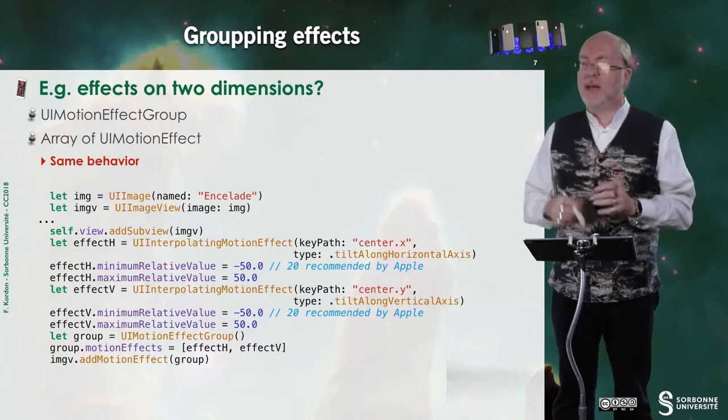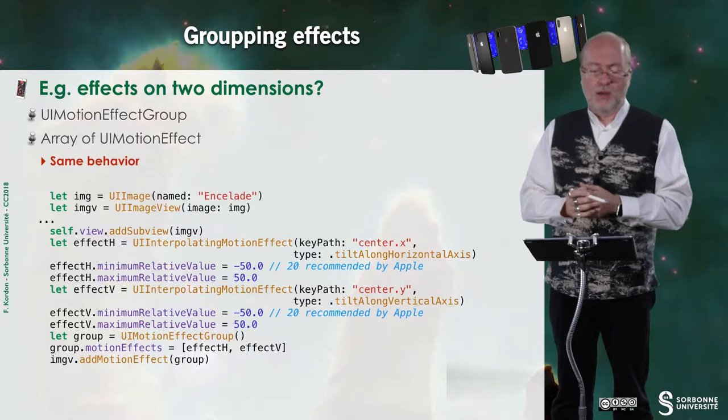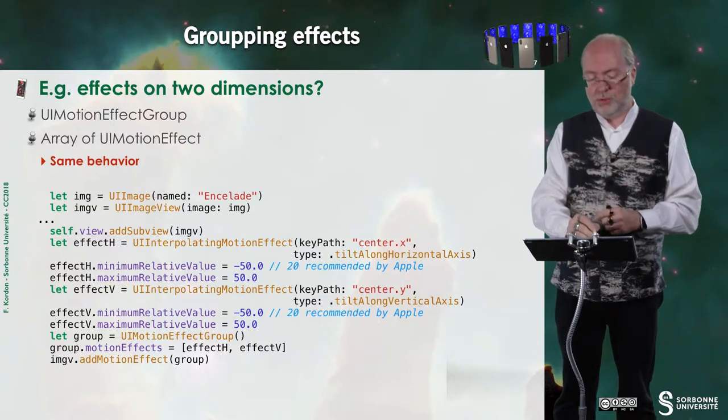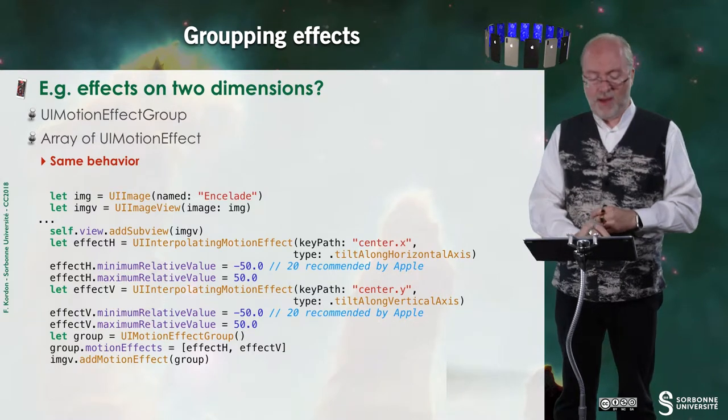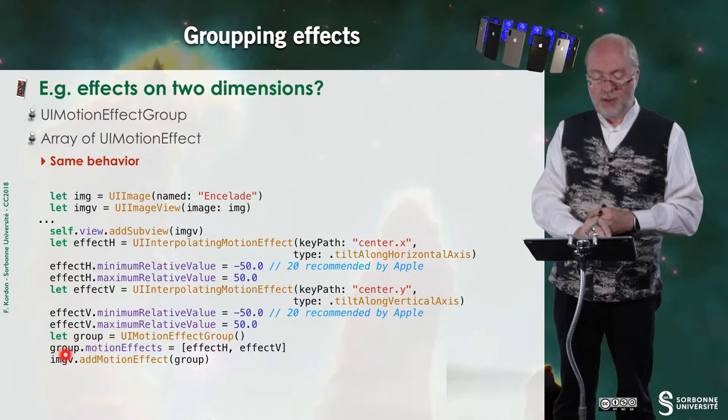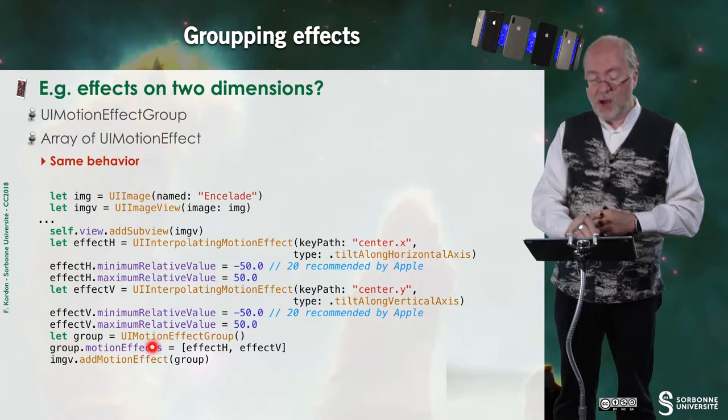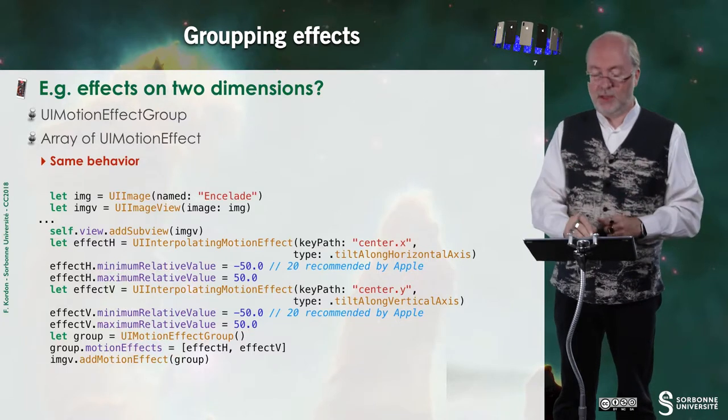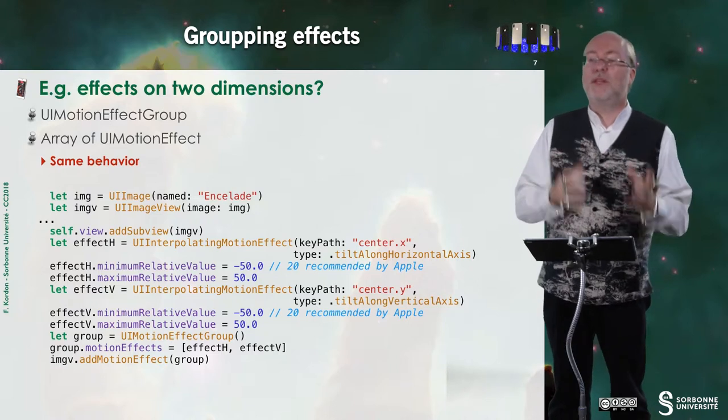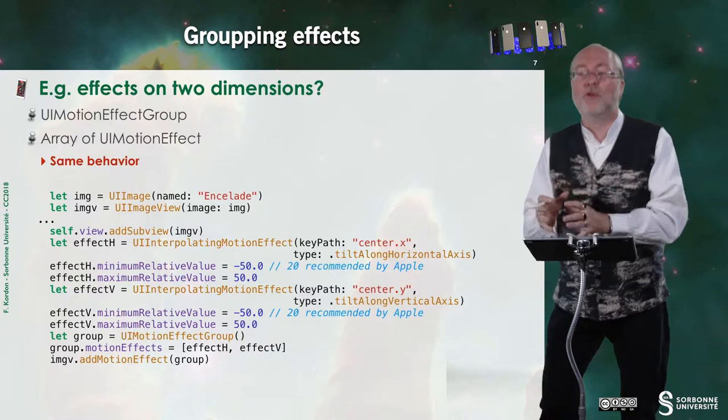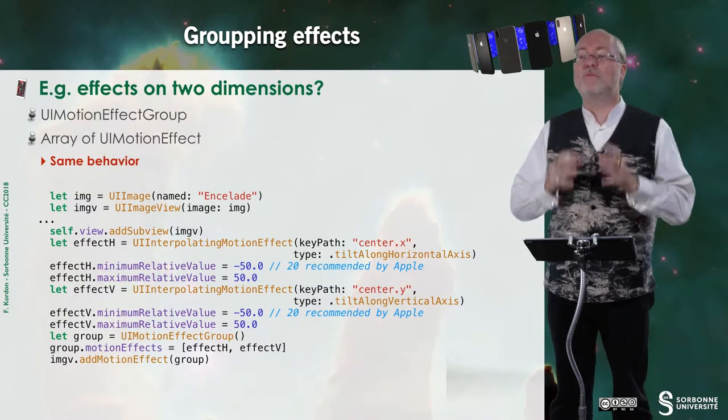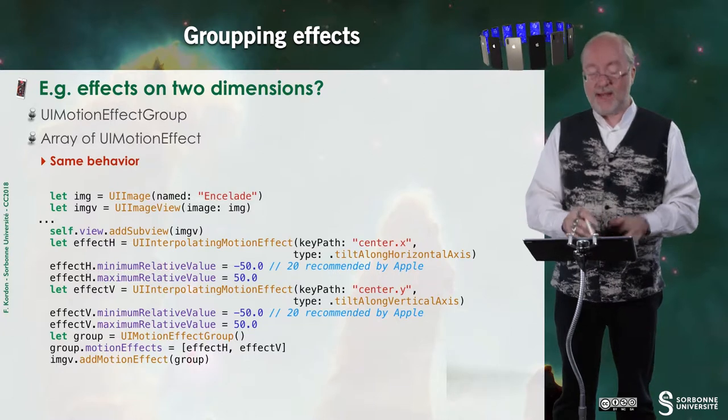I can have groups of effects. Because, let's imagine that I have a sophisticated effect and I want to group these effects together to add them to several views. So, here, for example, I group the effects on the two dimensions in one group. Once again, I create these effects. And here, I have the possibility to create a group that is a UIMotionEffectGroup. And then, I assign it an array of effects. So, this UIMotionEffectGroup is, in fact, an array of UIMotionEffects. And then, I can add not just the motion effect, but I can also add the group itself that embeds several effects together.